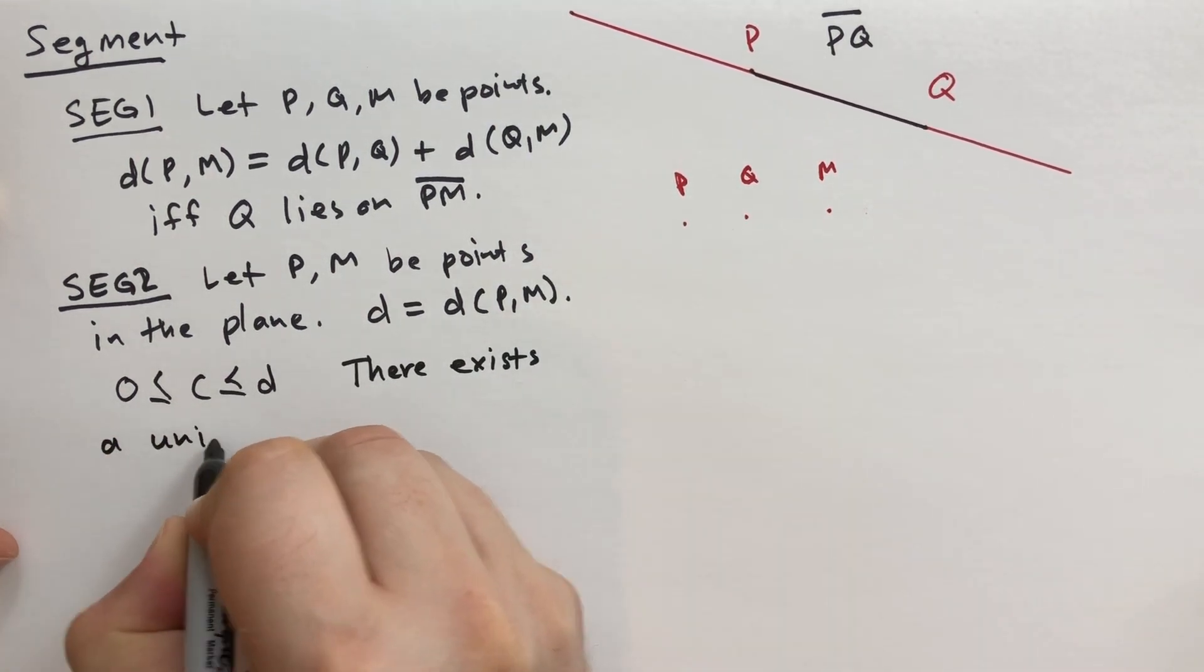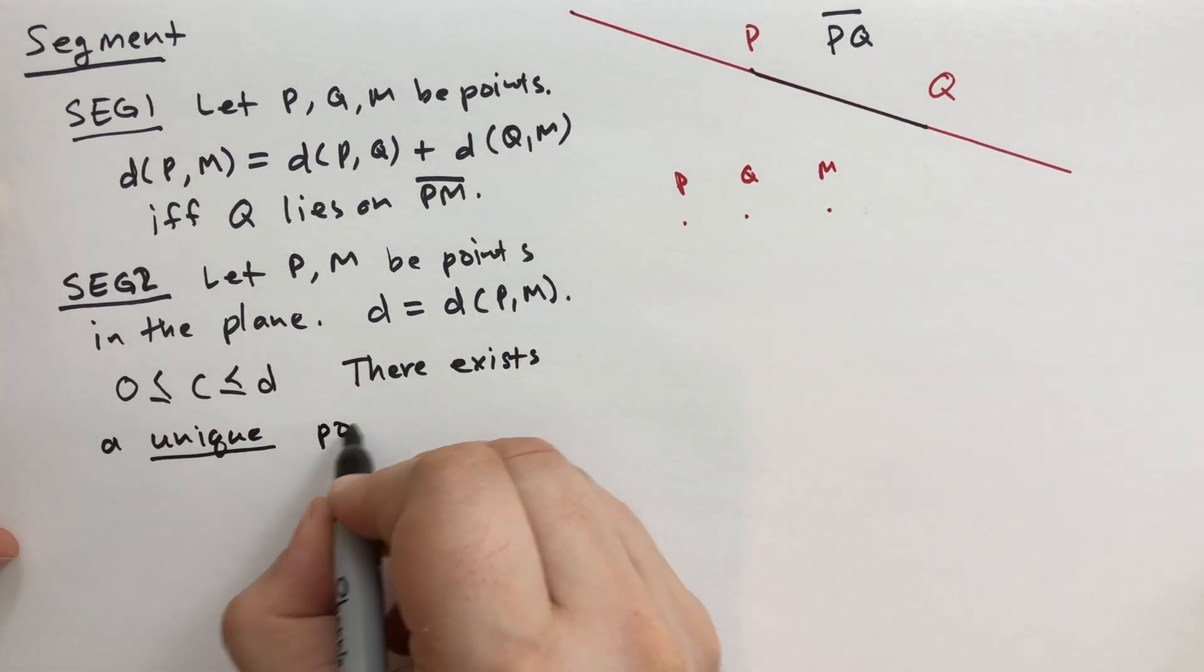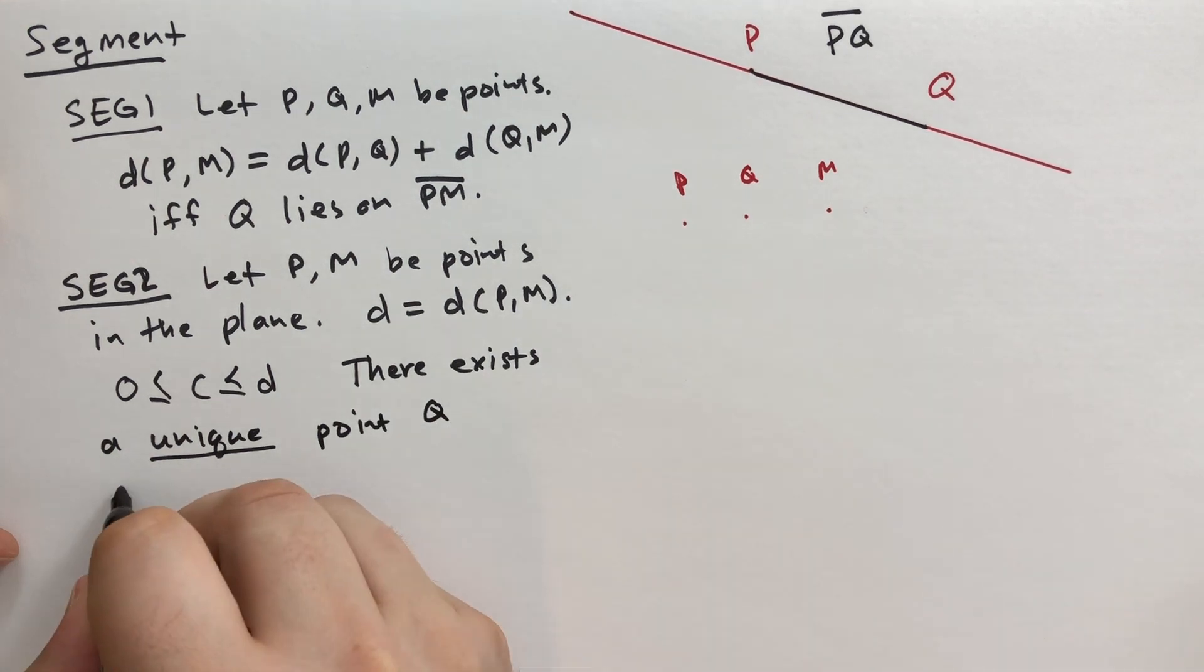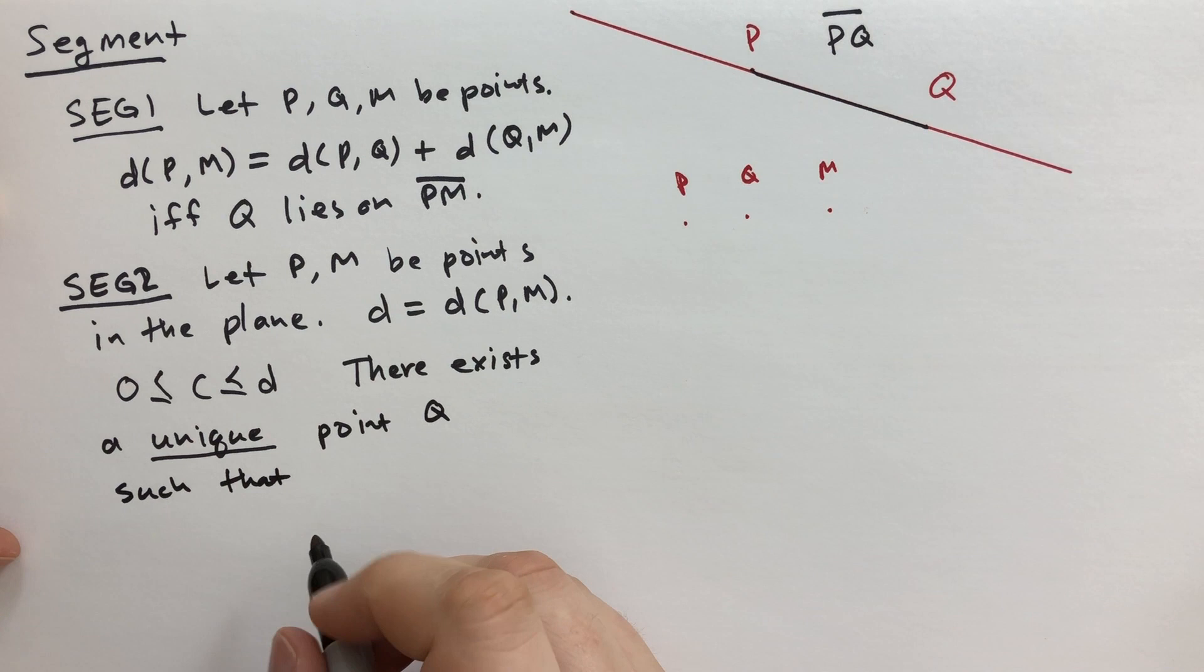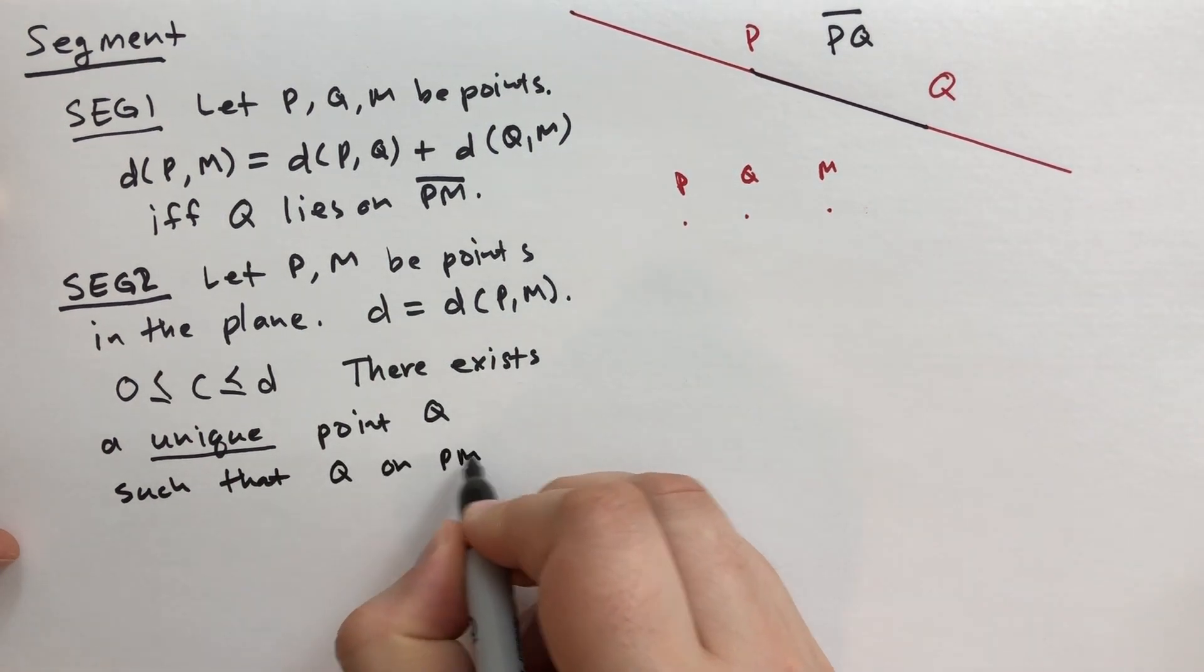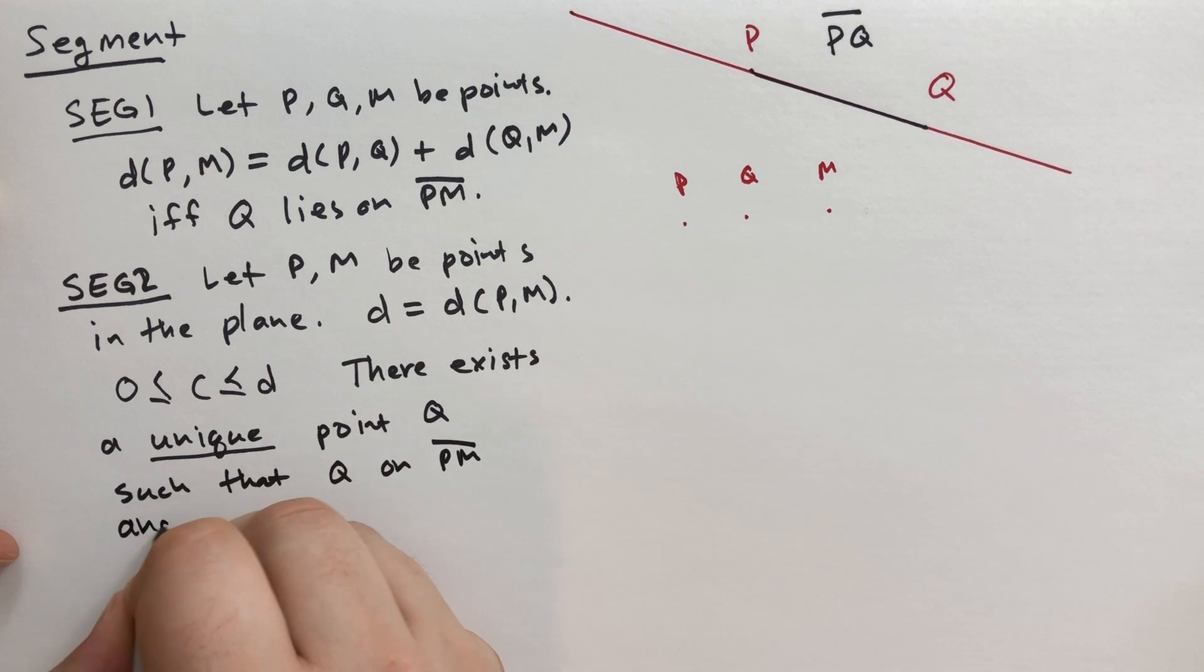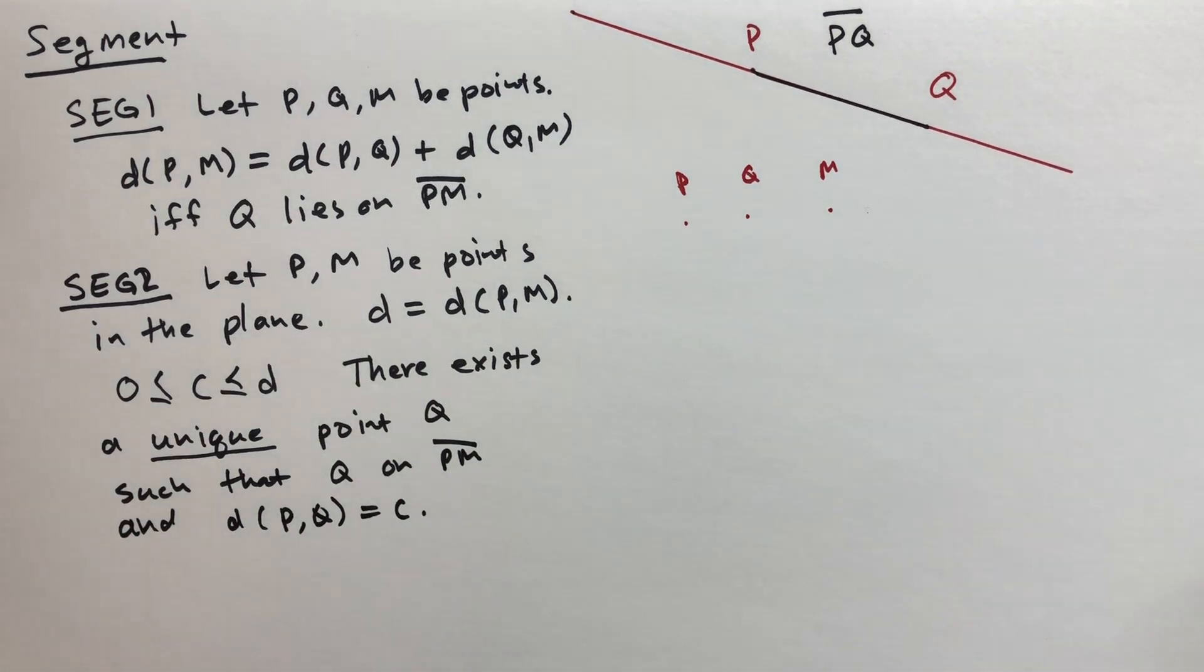Then there exists a unique, and unique is an important word in mathematics. It means there's only one. There can't be any other point, Q, such that Q is on the segment PM, and the distance from P to Q is equal to C. A lot of words. It's really a simple concept.